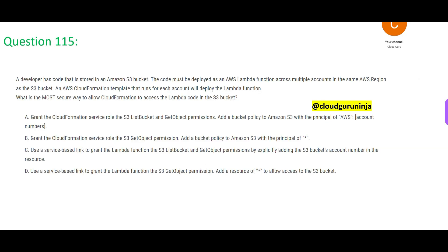Let's jump into the next question. Note that the next part we upload will be only for members, so please click the link in the description and become a Cloud Kernel or Cloud Ninja member — Cloud Kernel comes at a cheaper cost. The paid content is important to clear the certification; free content alone will not be enough. In this scenario, a developer is storing code in an S3 bucket — this blue box is the S3 bucket. It is code for Lambda, and they are using CloudFormation templates to run that code across various regions. What is the most secure way to access the Lambda code in the S3 bucket?